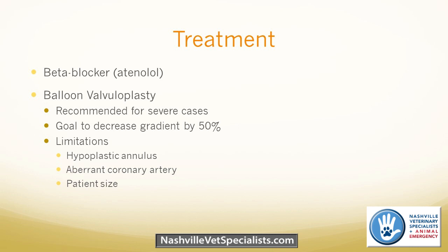Some limitations to balloon valvuloplasty: a hypoplastic annulus means the balloon won't help because we're not making the pulmonary artery itself any bigger. An aberrant coronary artery is another contraindication. Patient size is generally less of a concern here because we access through the jugular vein, and most dogs including small ones can undergo the procedure. Interestingly, I once performed a balloon valvuloplasty in an alpaca, which was challenging because its neck was so long to get the catheters to the heart.